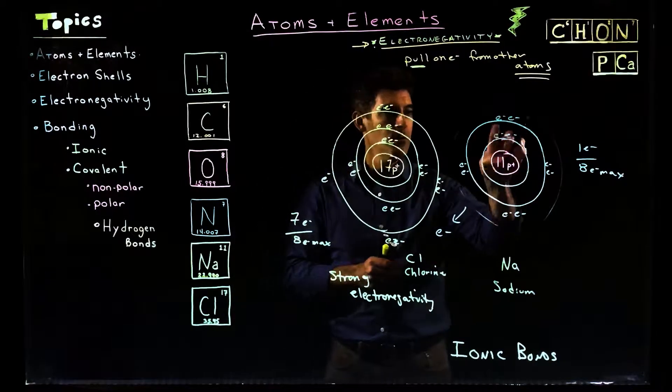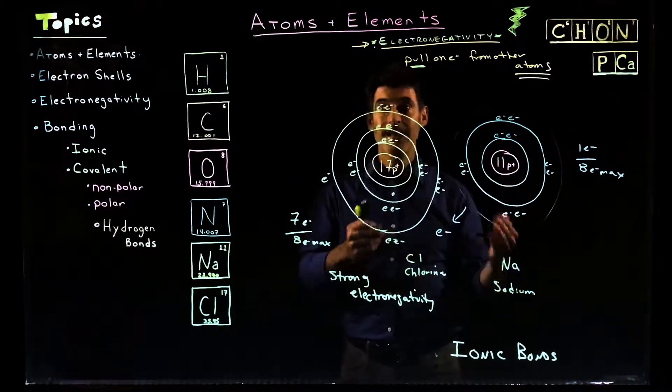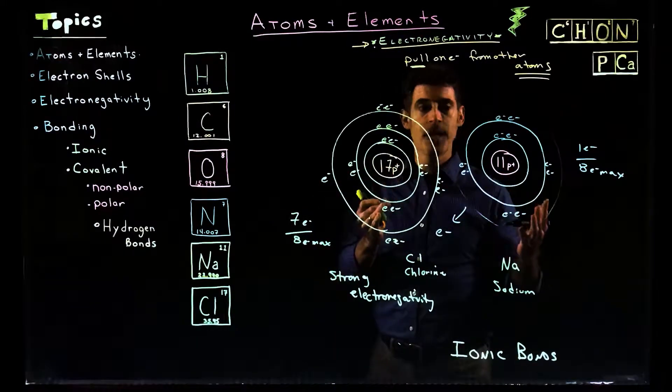That one electron, it leaves sodium. Now sodium has 2, 3, 4, 5, 6, 7, 8. It has a full outer shell. It's going to be stable. It's going to be in its actually more stable state.